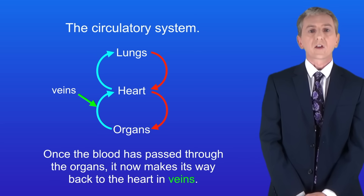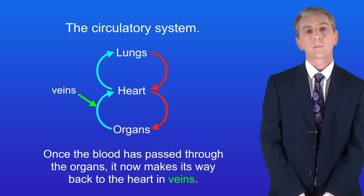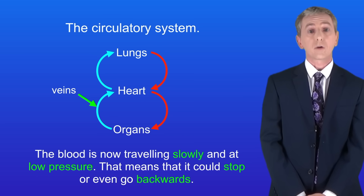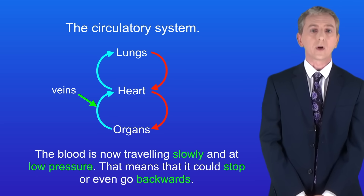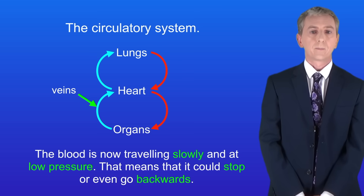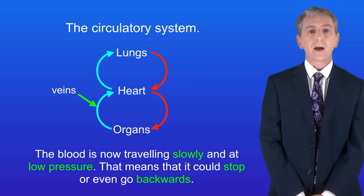Once the blood has passed through the organs it now makes its way back to the heart in veins. There's a problem here, which is that the blood is now traveling slowly and at low pressure. That means that it could stop or even go backwards.